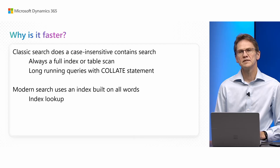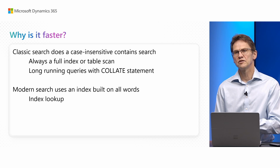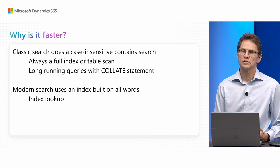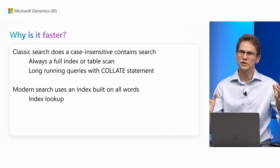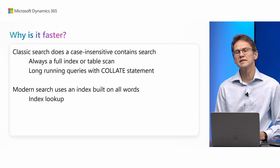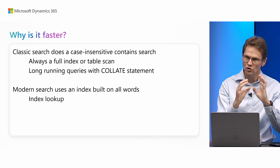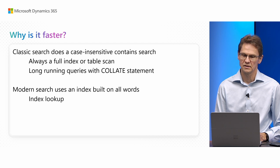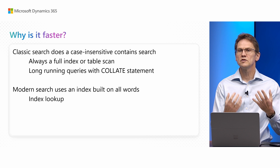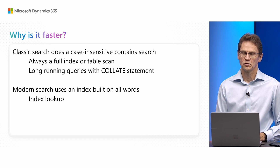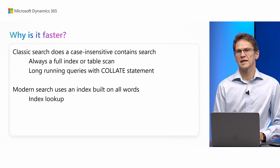You might wonder why this is so much faster. The legacy search does a case-insensitive contained search, which makes it impossible for SQL Server to use indexes — it always requires you to read the full table or full index. You will have seen this in long-running queries telemetry, where you see queries with COLLATE statements, which normally come from the page search functionality. Modern search, on the other hand, builds an index on every word. Now you have an index lookup into those words, and in general, index lookups are just an order of magnitude faster.